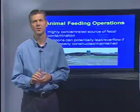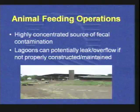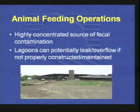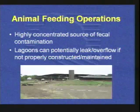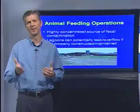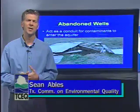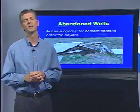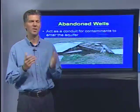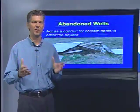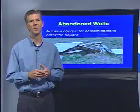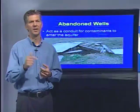Animal feeding operations are another source of contamination — highly concentrated sources with the ability to directly infiltrate the aquifer. A secondary contamination pathway would be overflow of a lagoon contaminating a surface water body, which could then enter the groundwater. Abandoned wells, although not directly a source of fecal contamination, can act as a conduit: if your well is properly constructed with natural barriers in place, abandoned wells can bypass those barriers and deliver contamination to the groundwater.